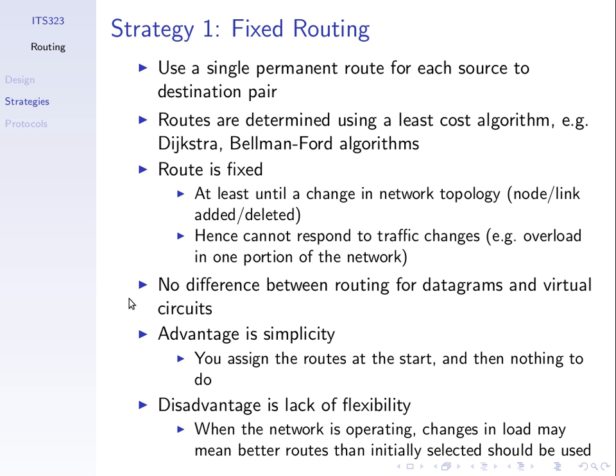When we build a network, we know all information about that network — who has links to whom, what the cost of those links are — and we can select the best path through that network. With fixed routing, we do that when we build the network and those paths stay fixed. What we want to cover is how we store that information, those paths, once we've calculated them. We arrived at a routing table yesterday.